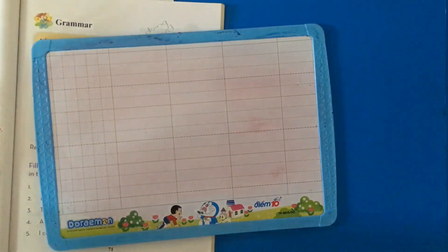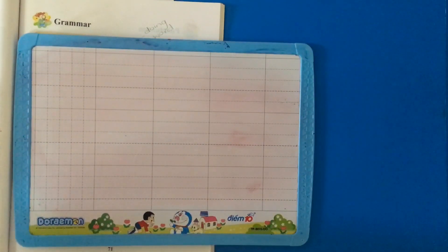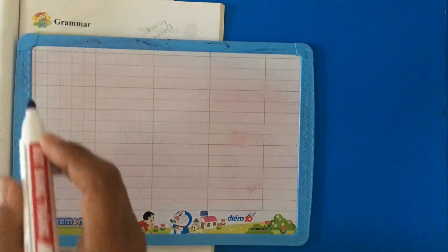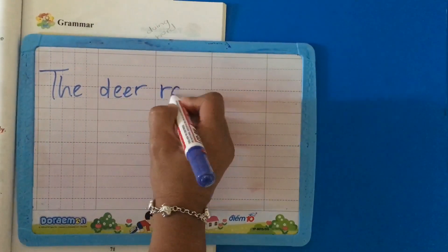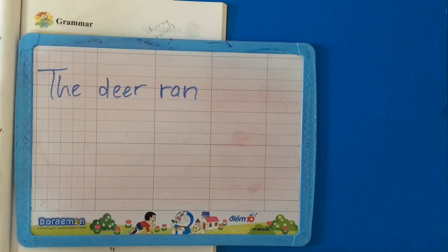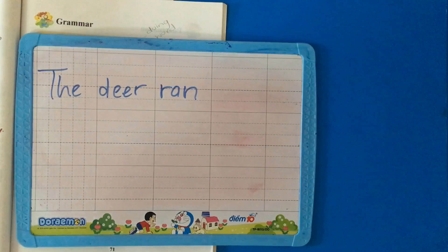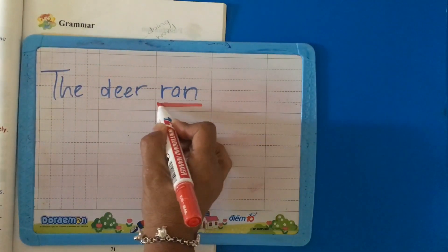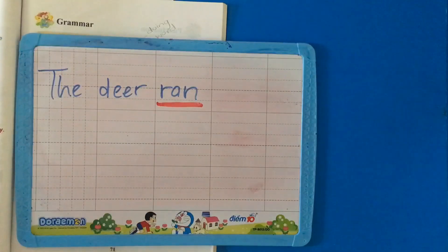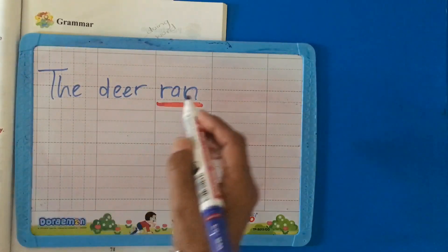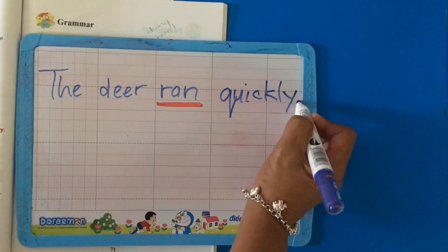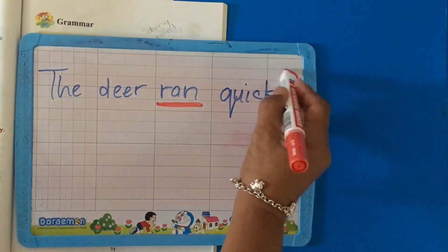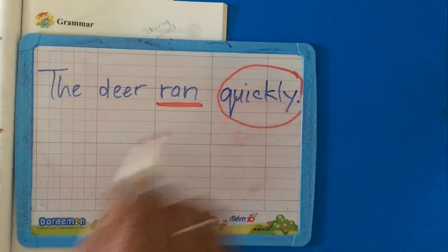We've said that the adverb describes the verb. So, let's find the verb in the sentence. The deer ran. What is the verb? The deer ran. So, ran is the verb. We have to describe ran. How did the deer run? The deer ran quickly. So, quickly is my adverb. And we will circle quickly.